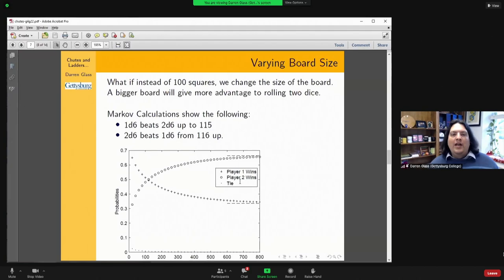Of course, from there we kept looking and said, well what if instead of changing the size of the dice, we change the size of the board? In this case we ask the question: what if you have one six-sided die or two six-sided dice, and which one is better for different board sizes? Maybe not surprisingly, it turns out that for a bigger board, the advantage of rolling two dice and moving up the board quicker outweighs the advantage of rolling one die and not getting stuck at the end.